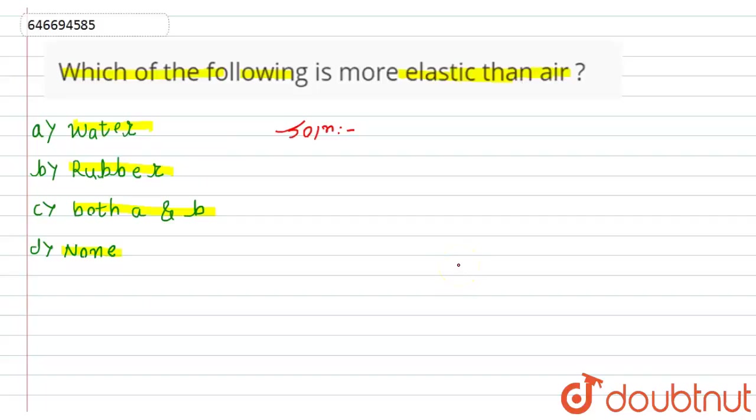Bulk modulus of material is reciprocal to compressibility. So B is bulk modulus and K is compressibility. If we talk about water and air: